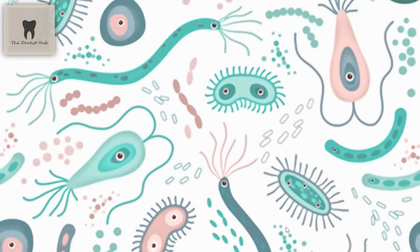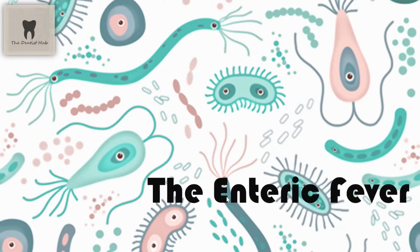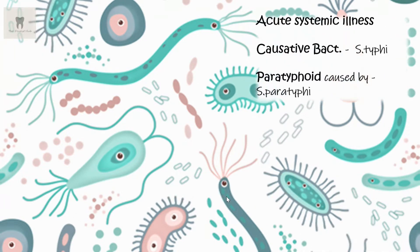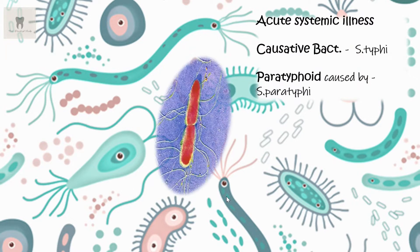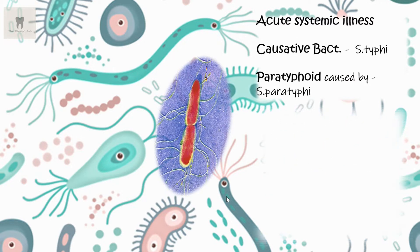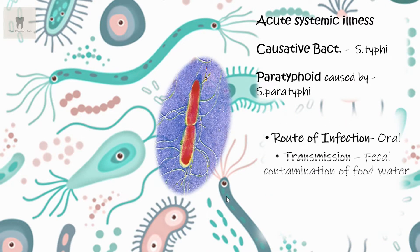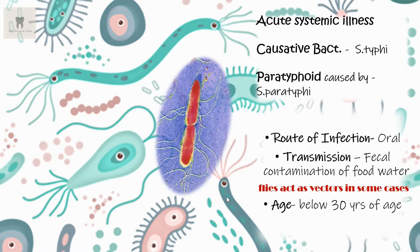Welcome to another video. Today's topic is enteric fever, also known as typhoid. Typhoid is an acute systemic illness caused by Salmonella typhi. There is another disease called paratyphoid, which has similar symptoms and is caused by Salmonella paratyphi. Typhoid is transmitted via the oral route through fecal contamination or poor sanitation. Flies can act as vectors and females are the most common carriers. The age group most affected is people below 30 years.